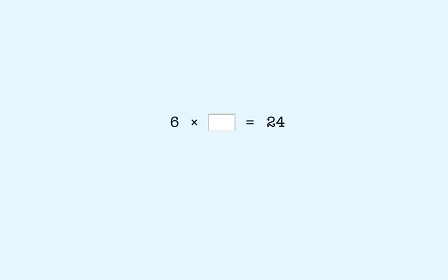We want to answer the question: 6 times what number equals 24? If you don't remember the answer, you can find it like this. You know that multiplying a number by 6 is the same as multiplying it by 2 and 3. We can find the missing factor by reversing each multiplication — first we divide by 2, then we divide by 3.